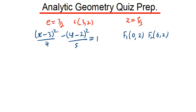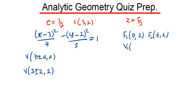For the vertices, since oriented on the x-axis, the formula is (h ± a, k). Our h is 3, a is 2, and k is 2. So vertex V1 is at (3 minus 2, 2) which is (1, 2), and vertex V2 is at (3 plus 2, 2) which is (5, 2).